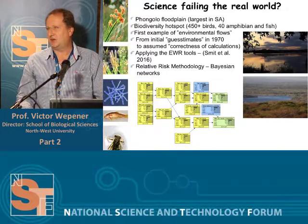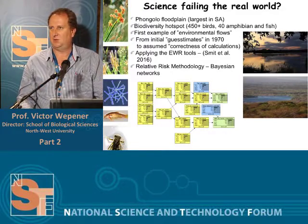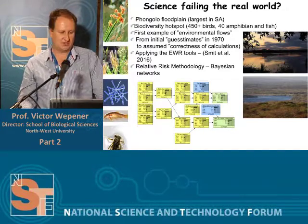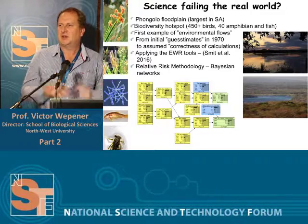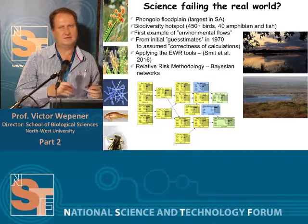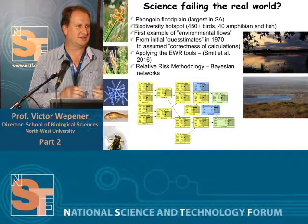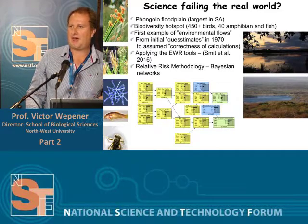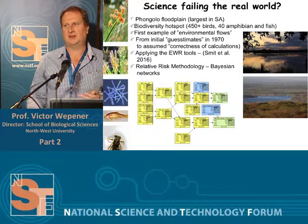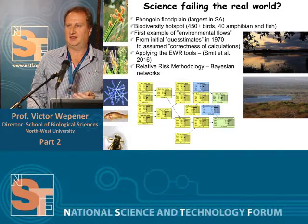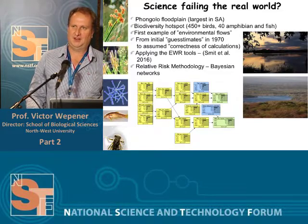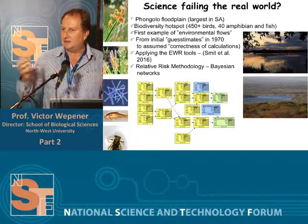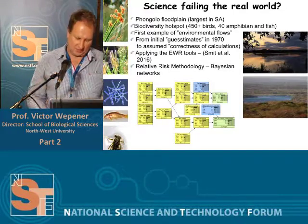We made use of the PROP flow methodology, which was developed by Chris Dickens, within a relative risk assessment methodology where we used Bayesian networks. Because the Pongola floodplain system is a very strongly linked socio-ecological system, people are reliant on the water that inundates the pans — not only for irrigation of crops, but also for drinking water and for harvesting fish protein. There is a very strong link between the way the floodplain operates and the social interaction of the community with this ecological system.